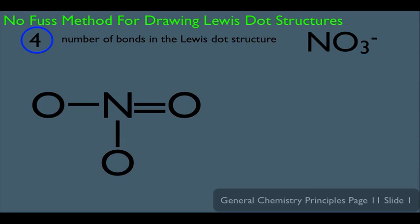We're not finished yet. The next step is to fill in the lone pair electrons using the octet rule. Looking at the right oxygen in this molecule — filling in electrons to give it eight total — we put two lone pairs on it. The double bond contributes four bonding electrons, so two lone pairs bring the total to eight electrons around that oxygen.